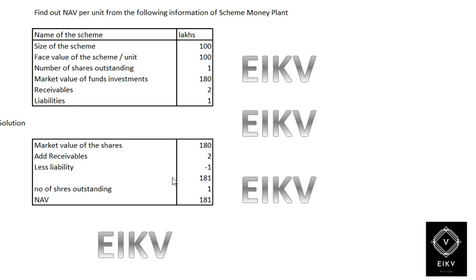This gives a total net asset value of 181 lakhs, which is then divided by 1 lakh units outstanding, giving you 181 per unit. The Net Asset Value (NAV) per unit is 181 rupees.